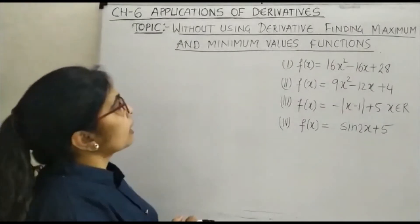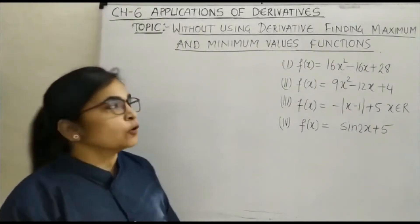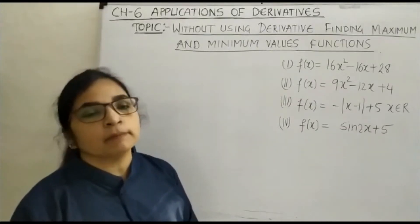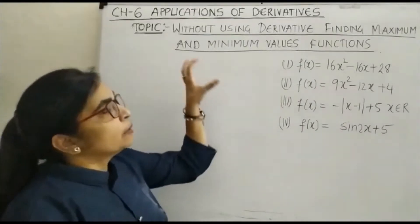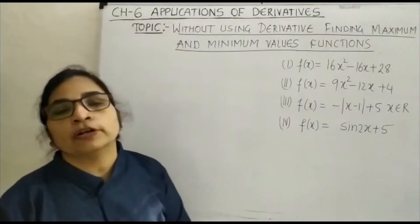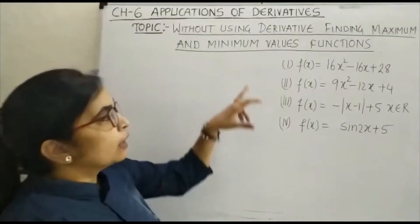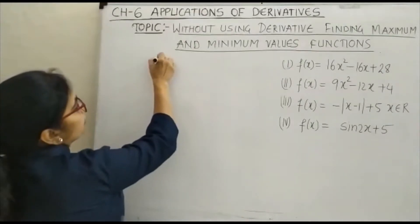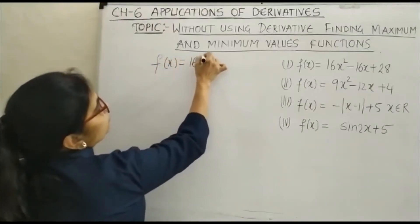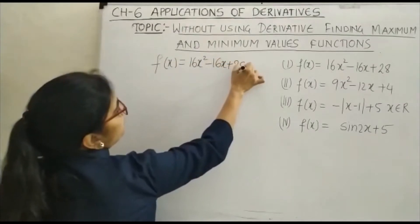Welcome to Chapter 6: Applications of Derivatives. Today our topic is how we can find the maximum and minimum value of a function without using the derivative. For that we have taken 4 different questions and we are going to see these questions one by one. Our first question is f(x) = 16x² - 16x + 28.